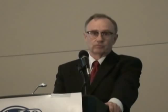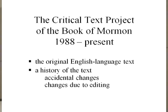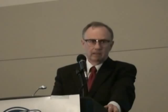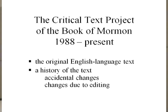What I'm going to be talking about today is restoring the original text of the Book of Mormon. I've been working on the Critical Text Project since 1988, and there are two main goals. One is the attempt to restore the original English language text to the extent that it can be done — the text that Joseph Smith received through the instrument and was able to read off. The second part is to determine the history of the text: the kinds of changes it has undergone, both accidental changes and changes that are consciously done, mostly of an editorial grammatical nature.